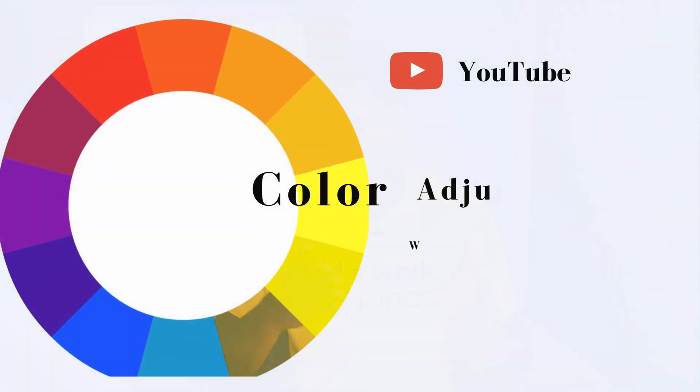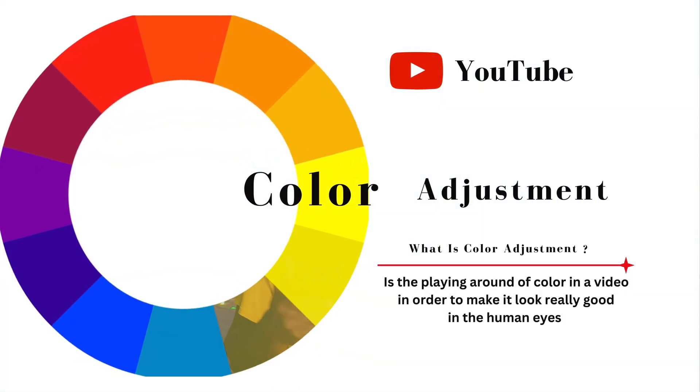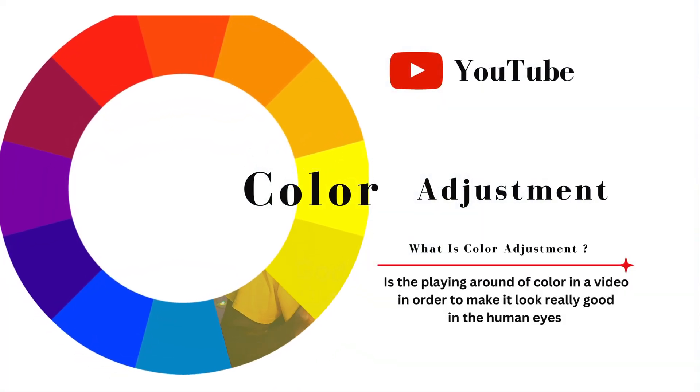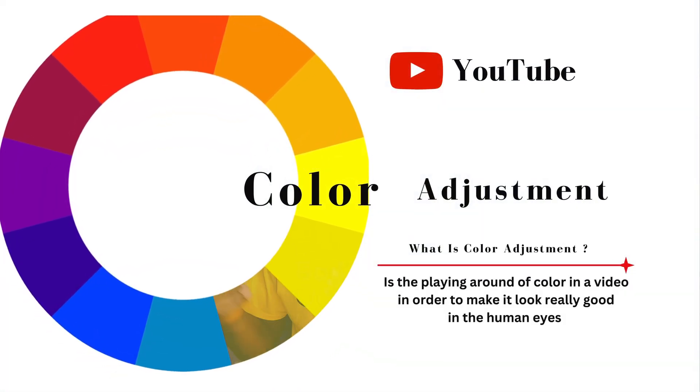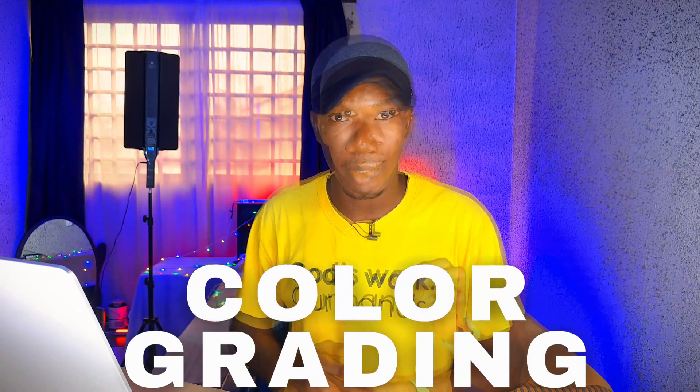I want you guys to understand some certain things and rules relating to color adjustments. What is color adjustment? Color adjustment is the playing around of colors in a video in order to make it look really nice to the human eye. If you can get this into your mind, trust me, you can play around with color adjustment or color grading.